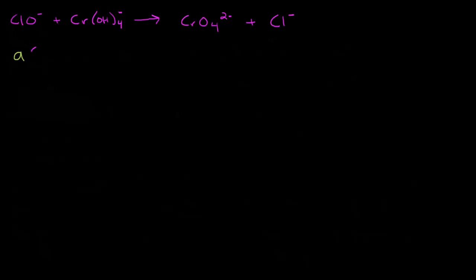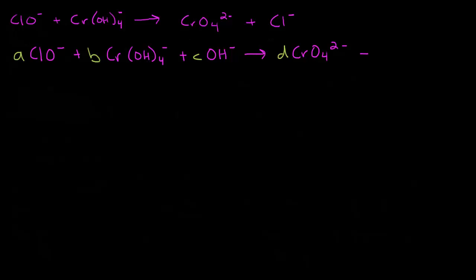So we have A ClO⁻ plus B Cr(OH)₄⁻ plus C OH⁻ yields D CrO₄²⁻ plus E Cl⁻ plus F H₂O. Since we have six variables but only four unique elements, we're not going to be able to solve this using our normal chemical balance equations. We're going to have to use the charge and the redox equations as well.